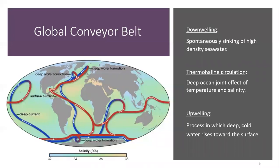As a direct result, high-density surface waters spontaneously sink in what's known as downwelling. These sinking waters are then replaced by waters that experience the same changes in temperature and salinity, and in turn also sink.